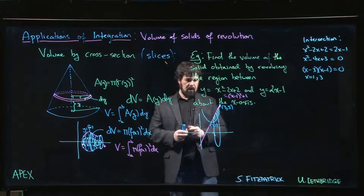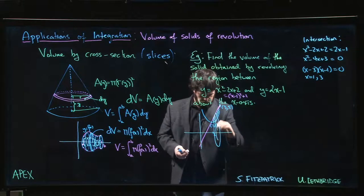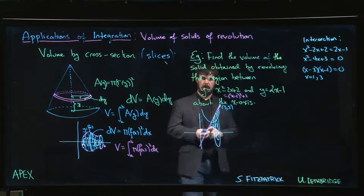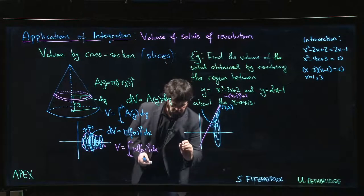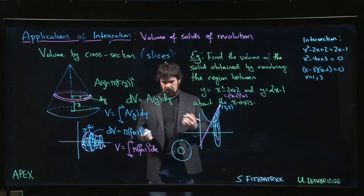But this inner curve is also going to revolve around and cut a hole out of the middle. So what we end up getting, if you were kind of looking at it face on, is you get a washer, or an annulus, if you want.